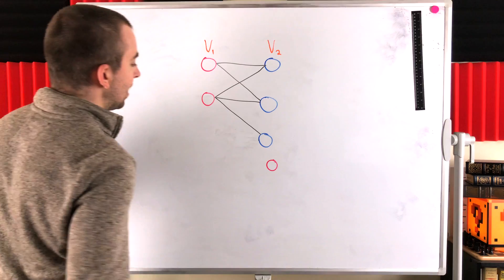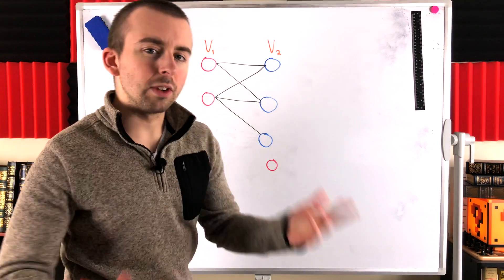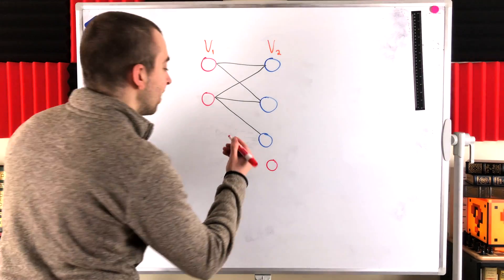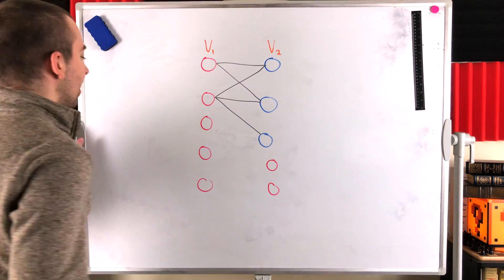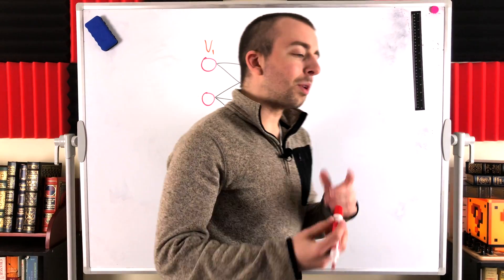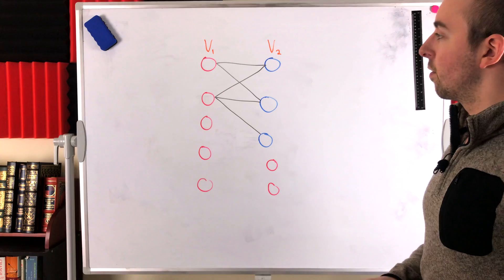If we had a bunch of different vertices that are all isolated, we could juggle them all around, put them in whatever partite set we please, doesn't matter. So we've lost the uniqueness of the partitioning.